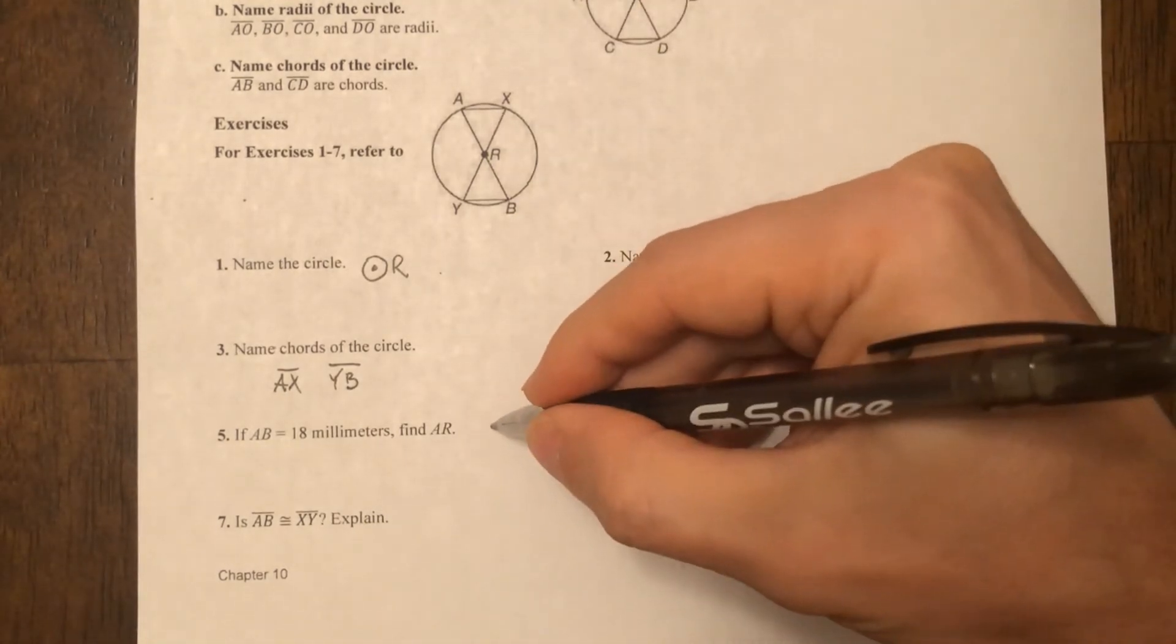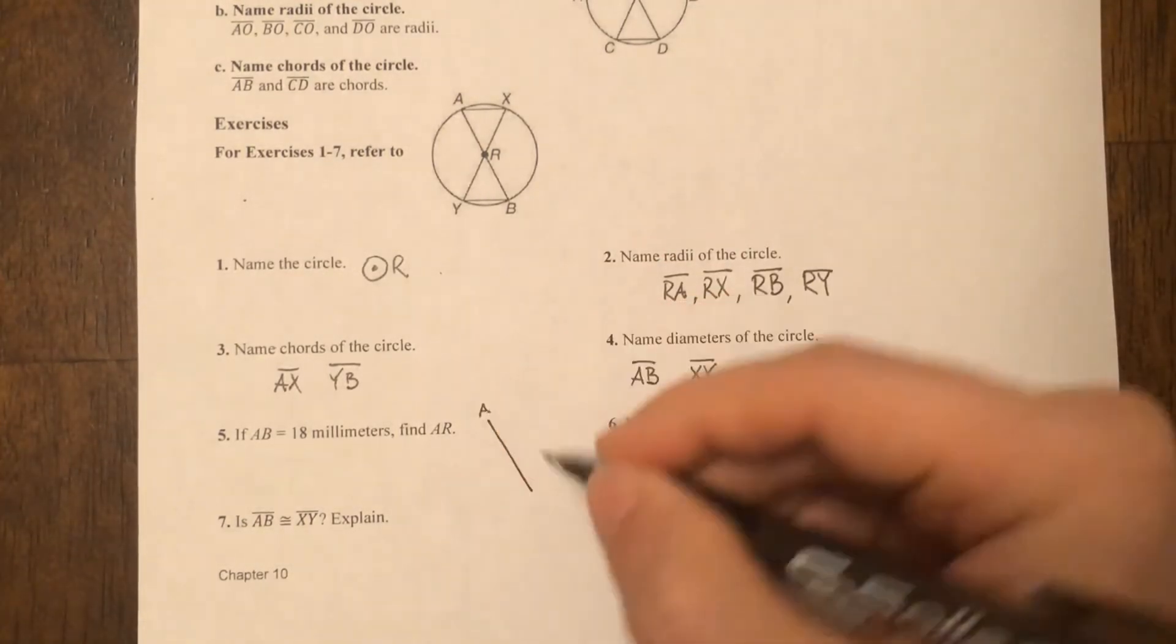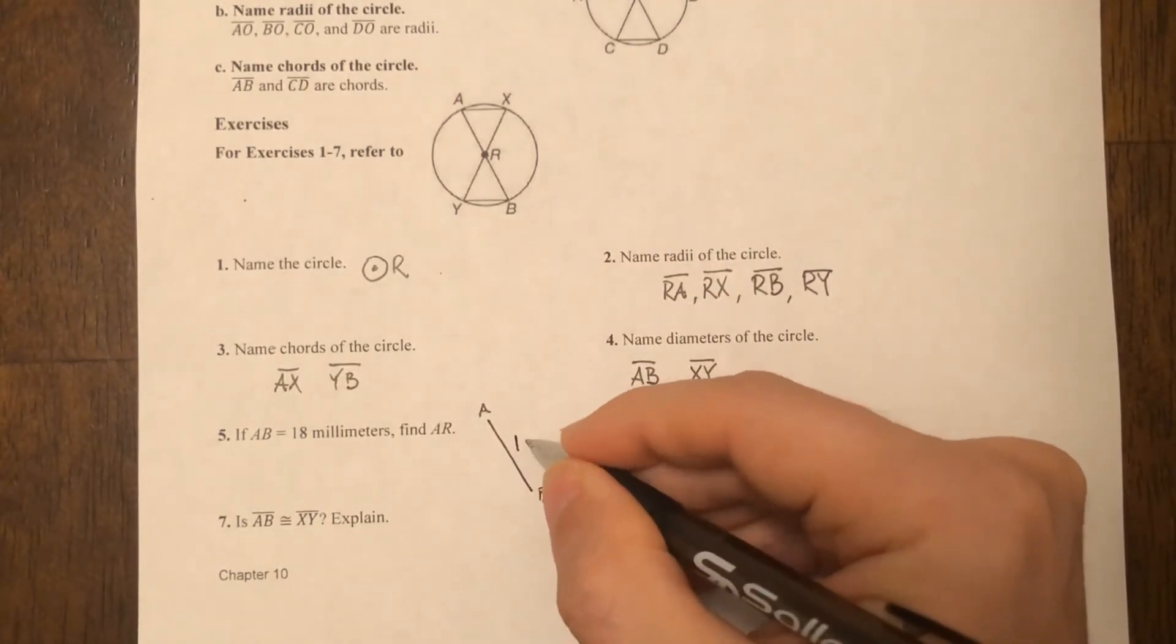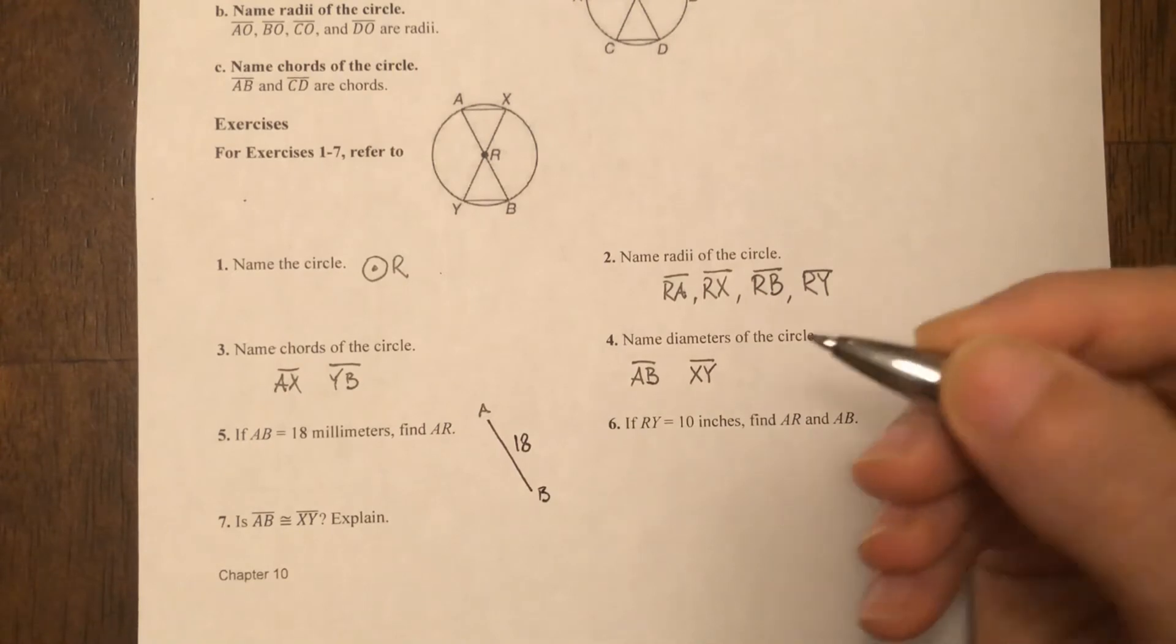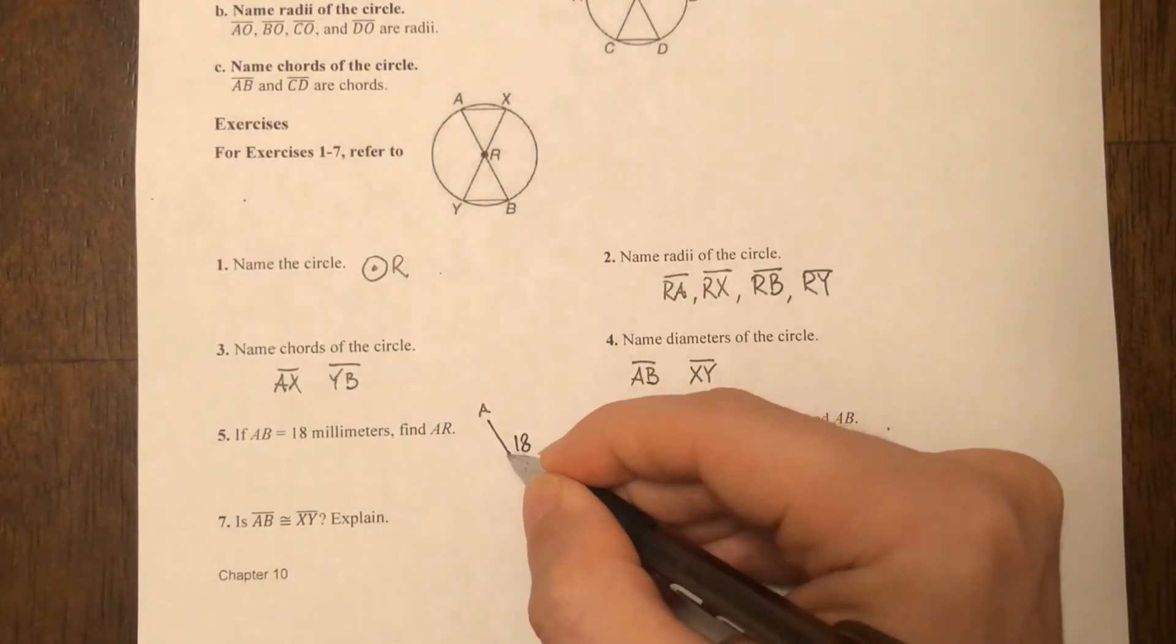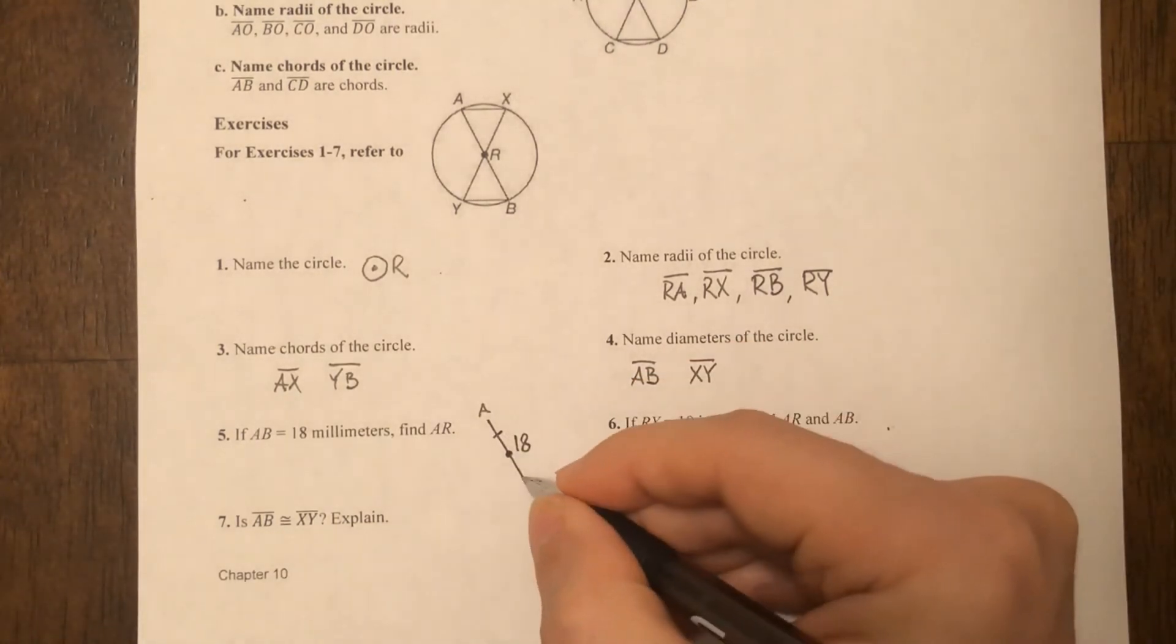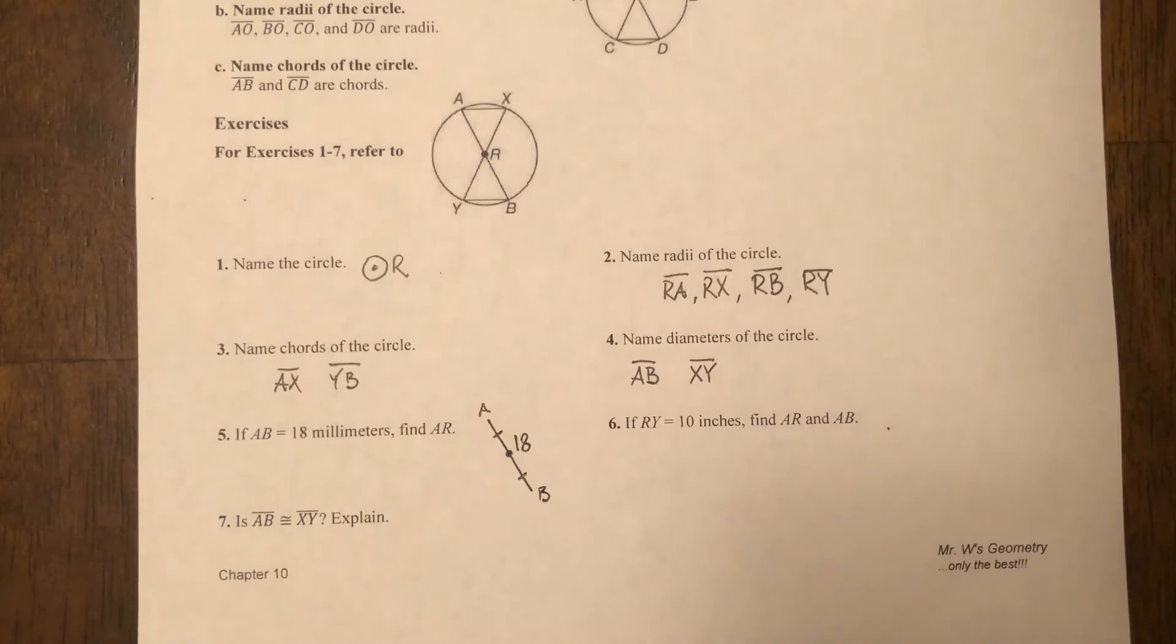Well, remember a diameter is made from two collinear radii. So we've got this diameter and we know this is 18 millimeters. Diameter is made up of two collinear radii, so that means that the radius here and the radius here, they're congruent.